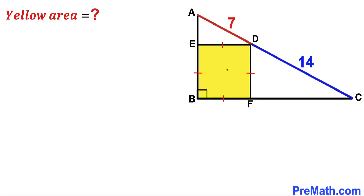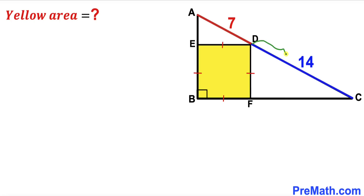Welcome to pre-math. In this video we have got a yellow shaded square BFDE fully inscribed in a right triangle ABC, such that segment AD is 7 units and segment DC is 14 units. Our task is to calculate the area of this yellow shaded square BFDE.